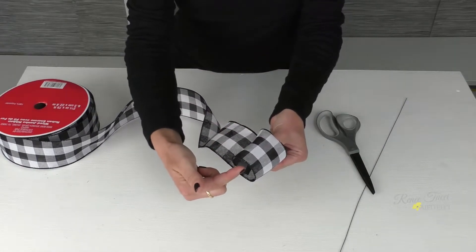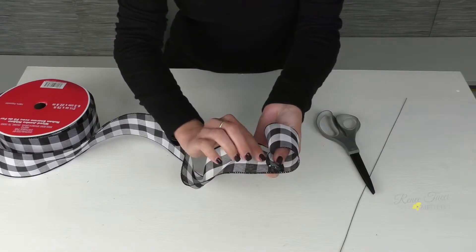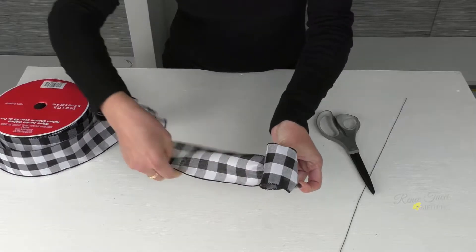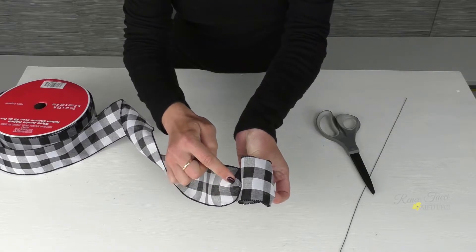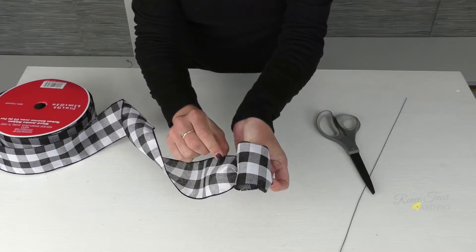So I folded the ribbon around on itself, creating my center loop, and then I'm going to take my ribbon and do a half twist. That's going to create a pucker here on the side of the center loop, which is really lending to that classic bow shape.